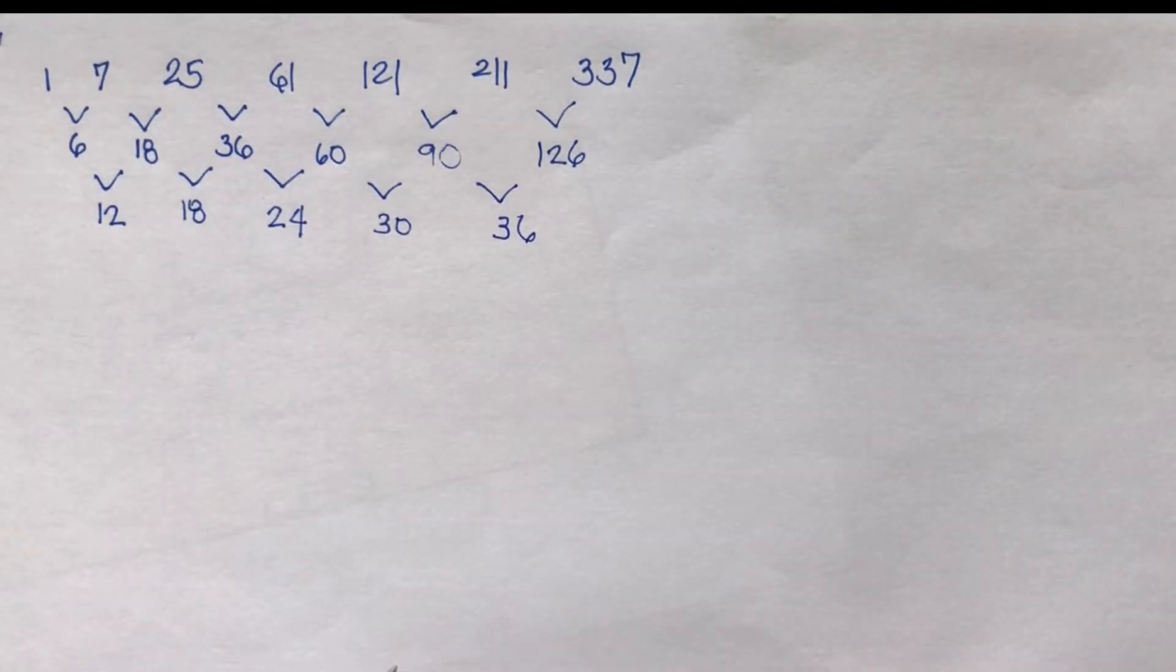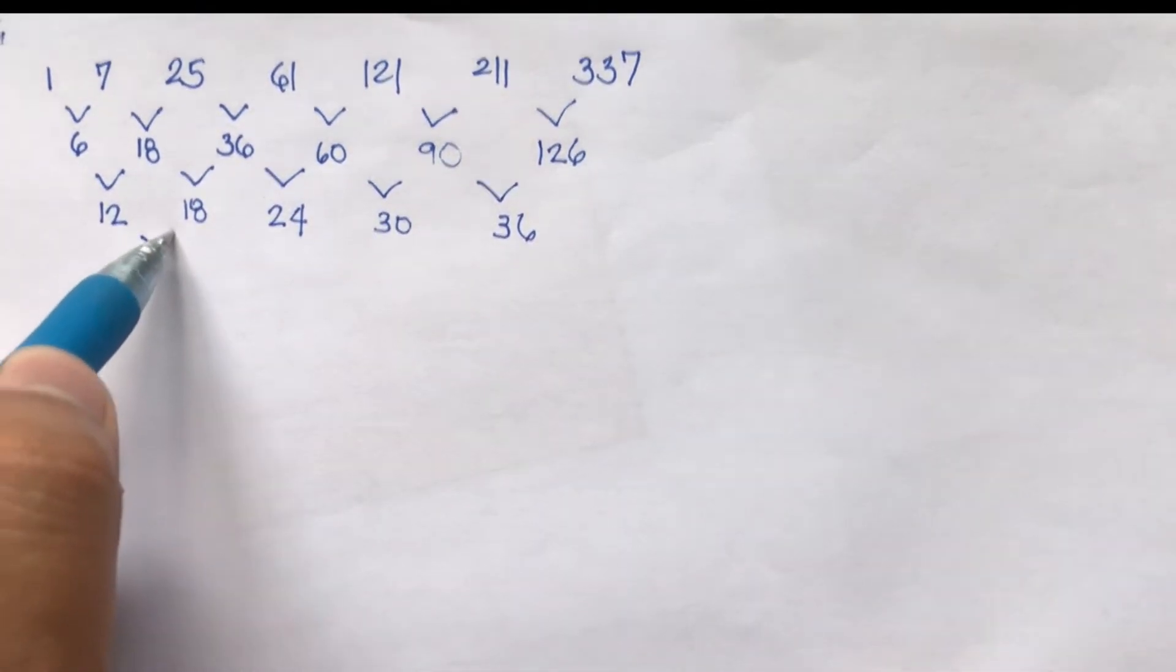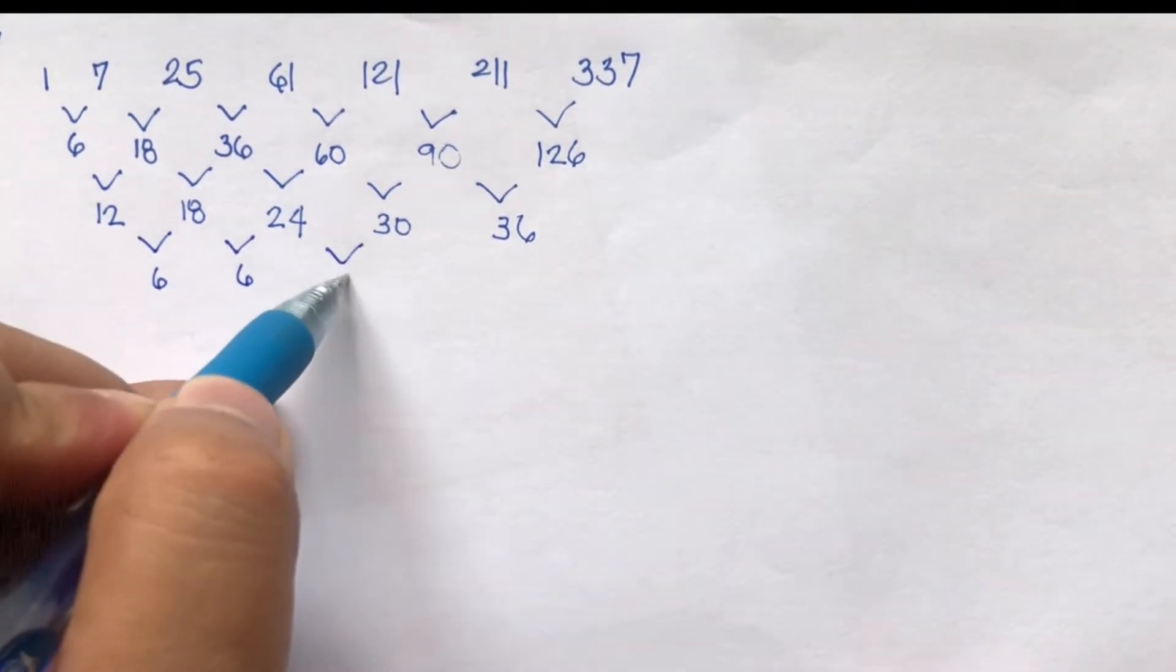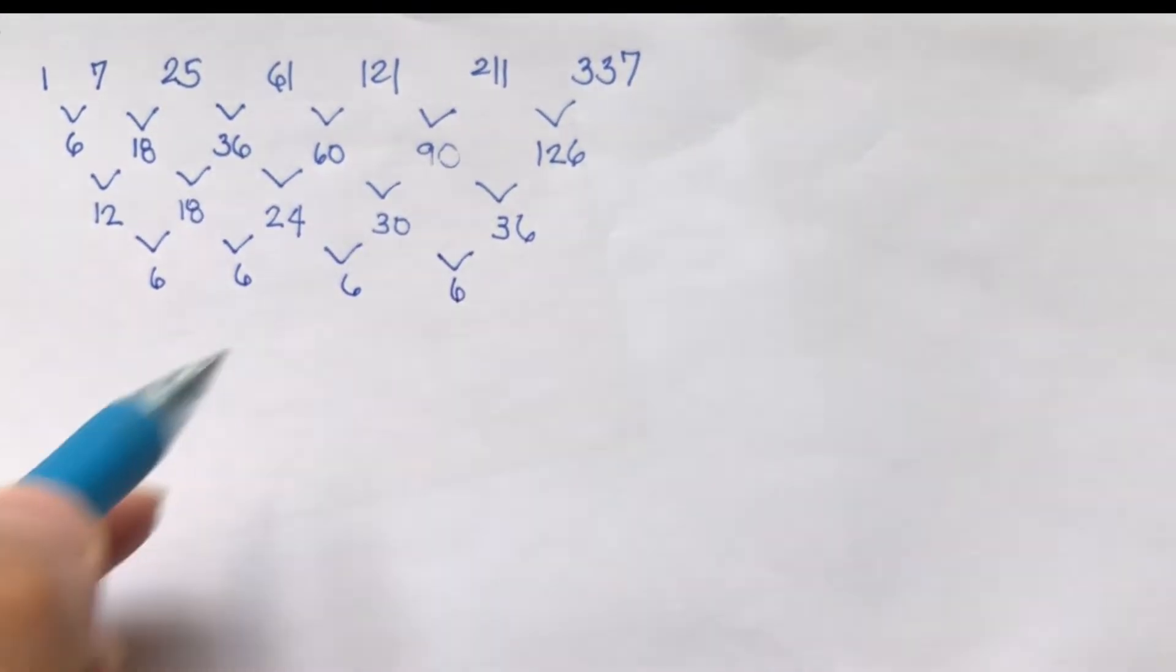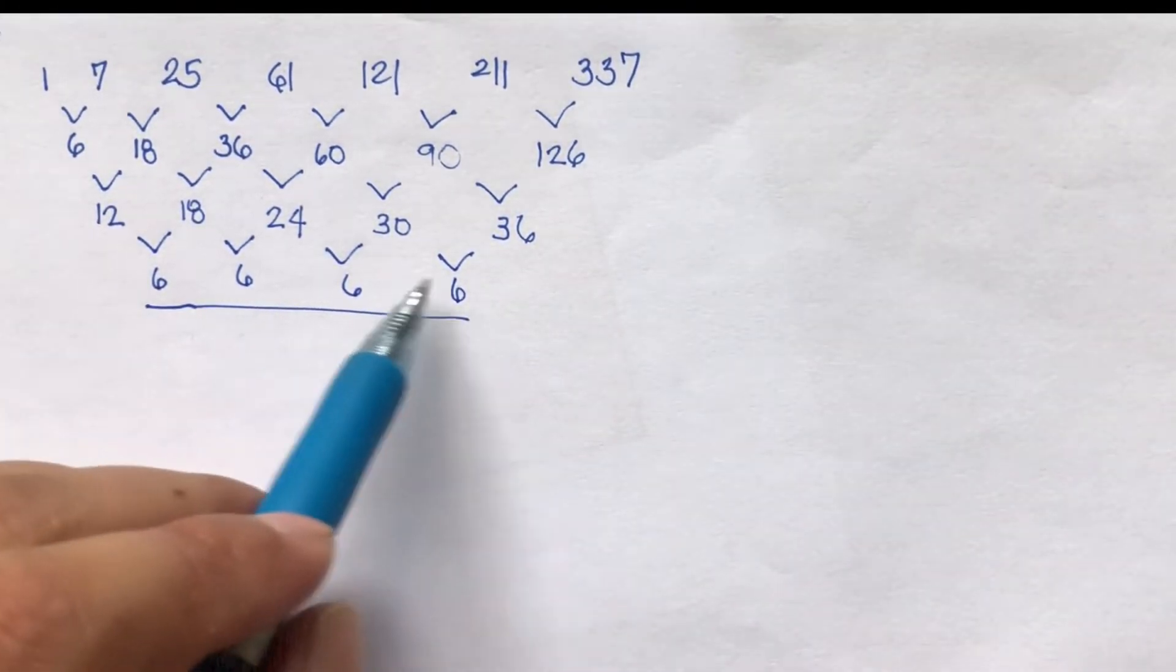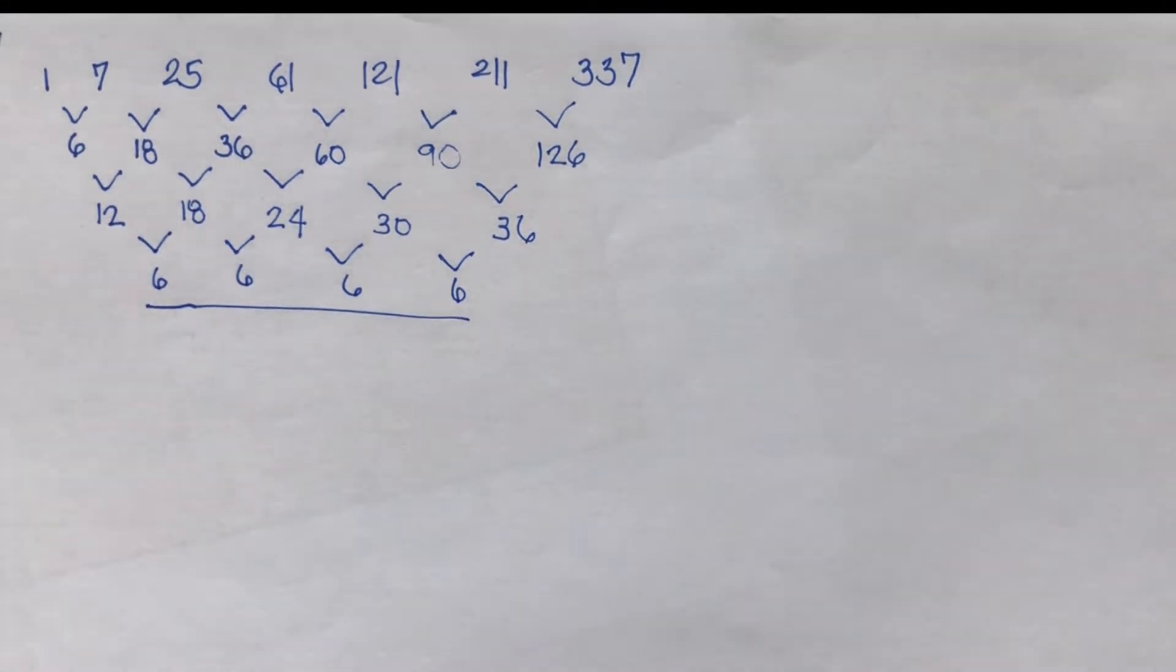So not second-degree quadratic. So let's proceed. 12 to 18 is 6, 18 to 24 is 6, 24 to 30 is 6, and then 30 to 36 is 6. So it is indeed a third-degree sequence or cubic because the third-degree intervals are equal or constant.